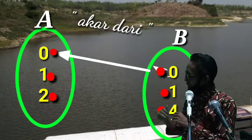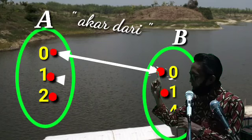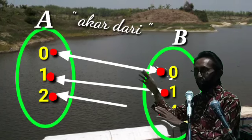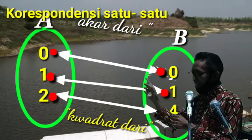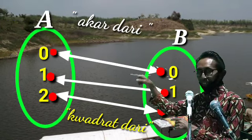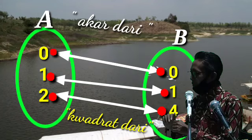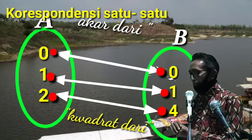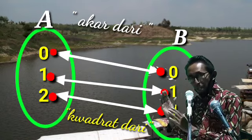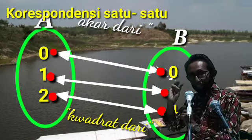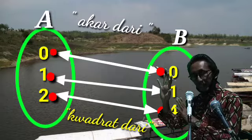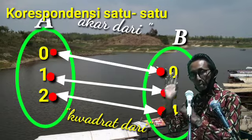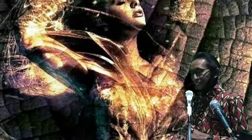Kita coba kembali pasangkan: 0 dengan 0, 1 dengan 1, 2 dengan 4. Sekarang kita balik dari B ke A. Relasi dari B ke A adalah 'pangkat dari': 0 dipasangkan dengan 0, 1 dipasangkan dengan 1, 4 dipasangkan dengan 2. Sekarang perhatikan — banyaknya anggota himpunan A dan B sama, yaitu ada 3. Semua anggota A dan B dipasangkan satu-satu, tidak ada yang ganda, tidak ada yang tidak dapat pasangan. Inilah yang dinamakan korespondensi.